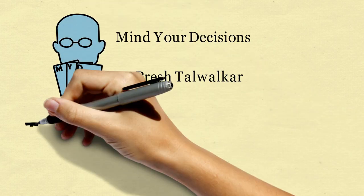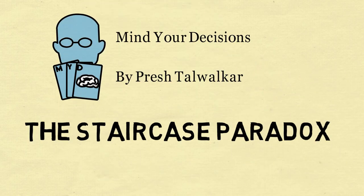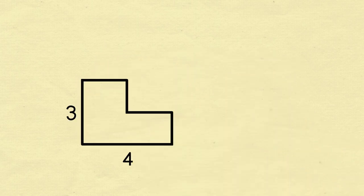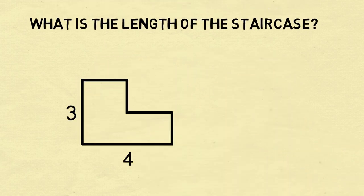Hi, this is Presh Talwalkar. Let's discuss the staircase paradox. Imagine a staircase composed of two steps that have a horizontal distance of 4 and a vertical height of 3. What's the length of this staircase?